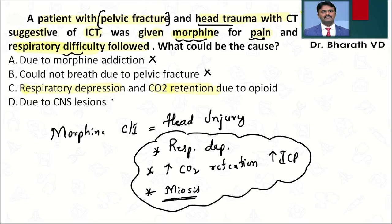There is no CNS depression history given in the question, so it is the drug that is responsible. The answer is option C — morphine caused respiratory depression and CO2 retention, which increased intracranial pressure further and worsened the problem.